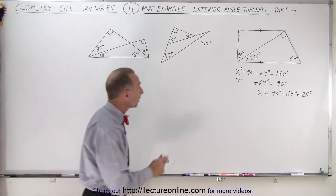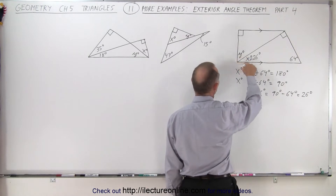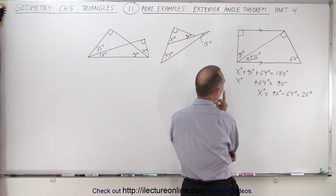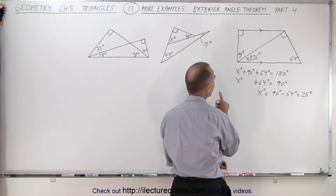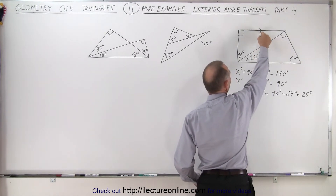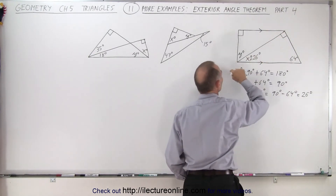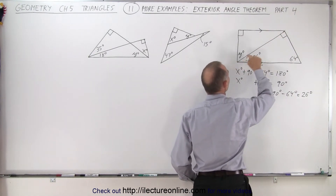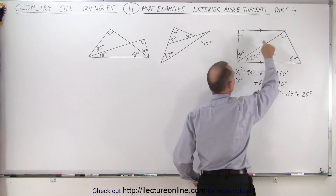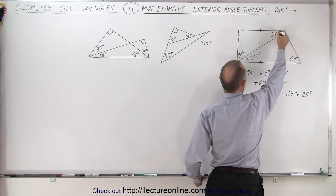Now, do we know if this is a right angle? We don't know for sure. But what we do know is that these two lines are parallel to one another — the little arrows indicate that. And here we have a transversal, which means alternate interior angles must be equal to each other. So if this angle is 26 degrees, then this one must be 26 degrees as well.